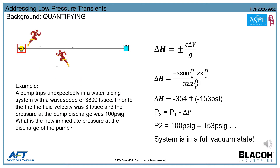What is often overlooked is that it does not take much of a change in velocity to send some fluids into a full vacuum state. In this example, water is flowing at a velocity of 3 feet per second, the system's wave speed is 3,800 feet per second, and the steady state pump discharge pressure is 100 psi. The system experiences an unexpected pump trip — and assuming no surge protection and a long wave period, the system is now in a full vacuum state.